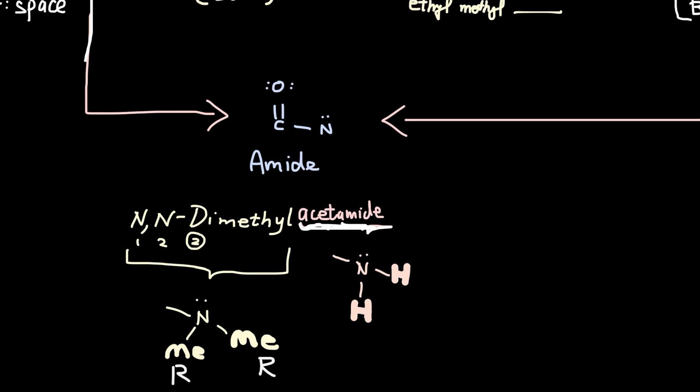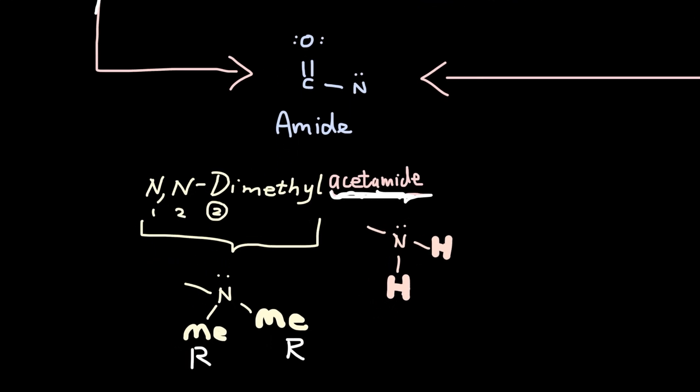But if these H's get substituted by any group, let's say methyl, you will need to name it as dimethyl. But of course, you only use di if both of those substituted groups are the same. And make sure to write N, N dash, which shows that it's being substituted on the N.